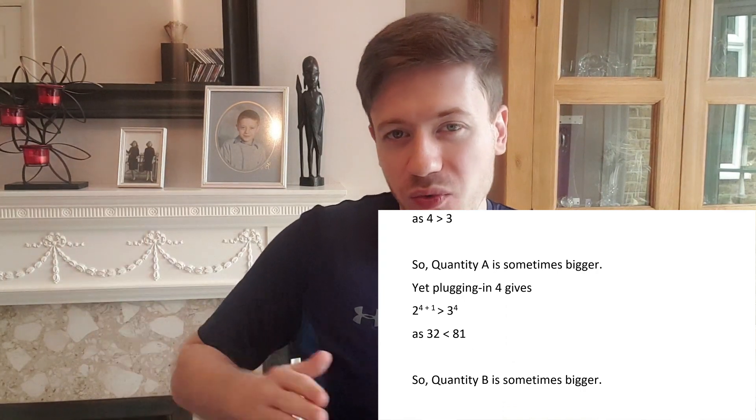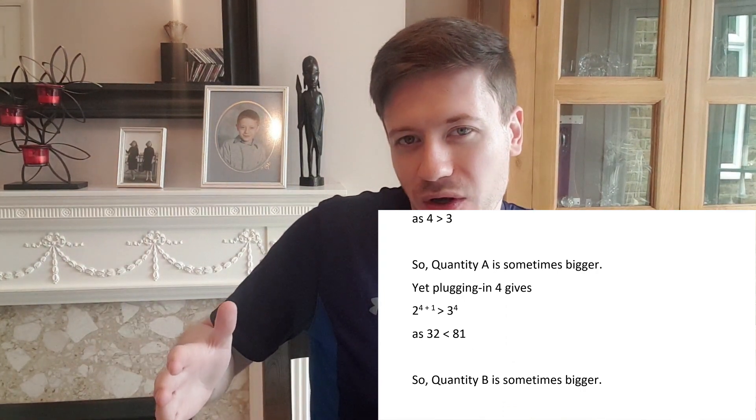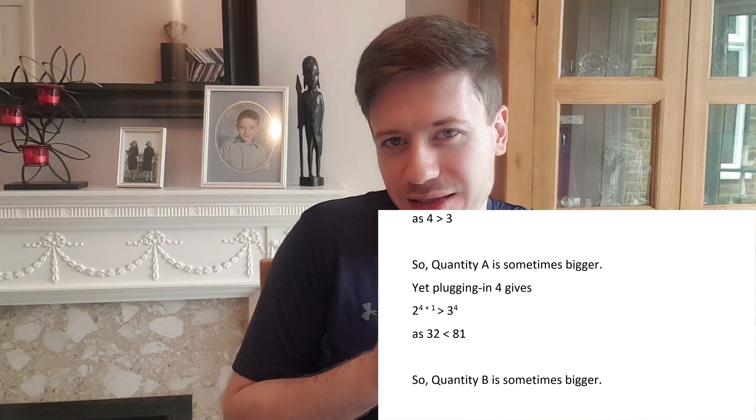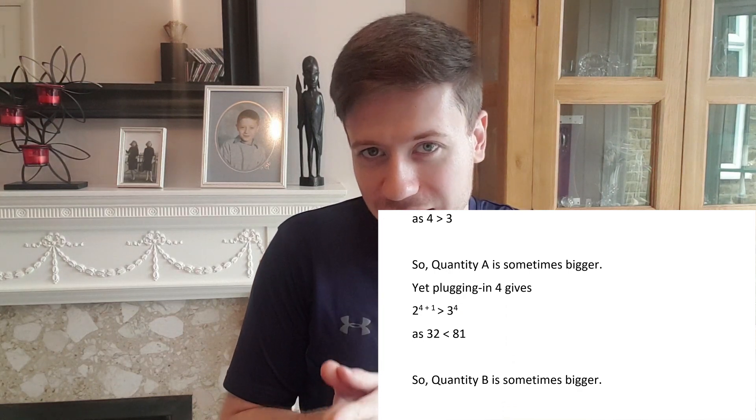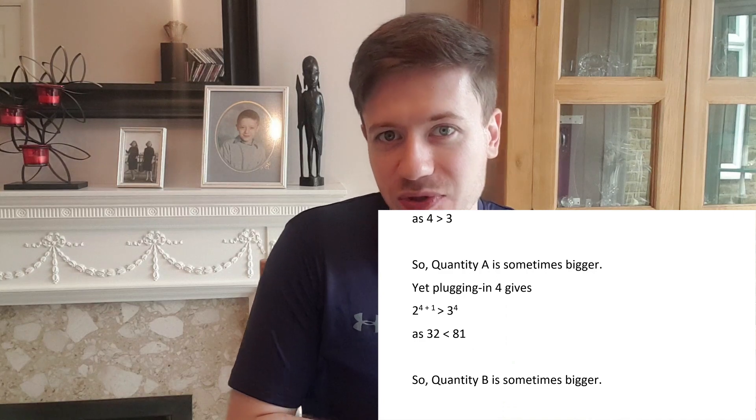But when we plug in 4 which is quite a different number to 1 much bigger in this situation then we get that indeed quantity B can be bigger than quantity A as we saw earlier. So by picking these extreme values we can clearly see that the answer is D. There is no clear relationship. Sometimes quantity A is bigger sometimes quantity B is bigger. I hope that clarified a great example of when to pick numbers.